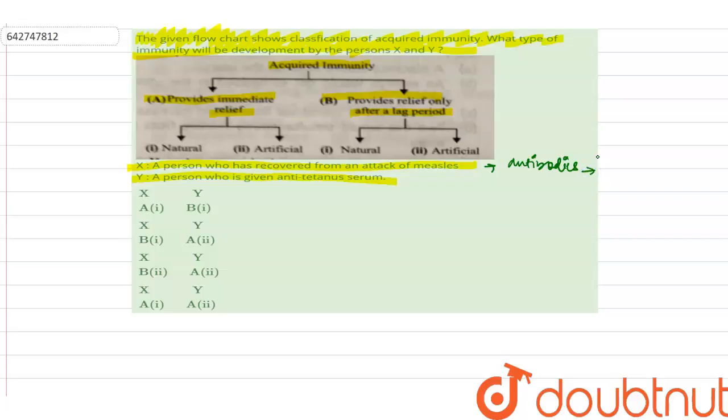What happens when the person is again attacked with measles? When the person again suffers from measles, the antibody that is present in the individual's body will provide relief.